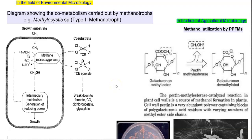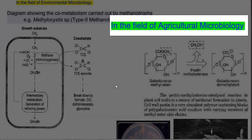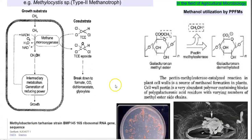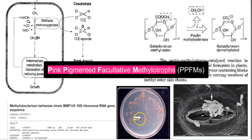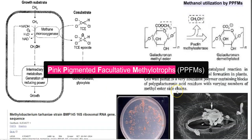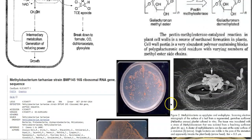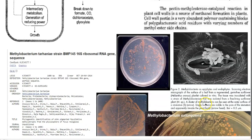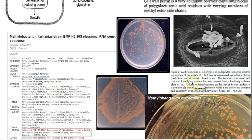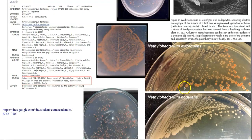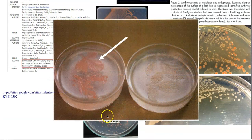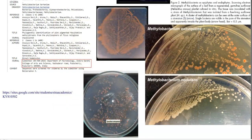The next application is methylotrophs in agricultural microbiology. Methylobacterium, which produces pink pigment and is referred to as a pink pigmented facultative methylotroph, has the ability to utilize methanol released from the degradation of pectin by pectin methyl esterase enzyme. They are present on the leaf surface and can be easily identified near the stomata. When isolated from leaves and grown on plates, they show pink pigmentation due to the carotenoids produced.